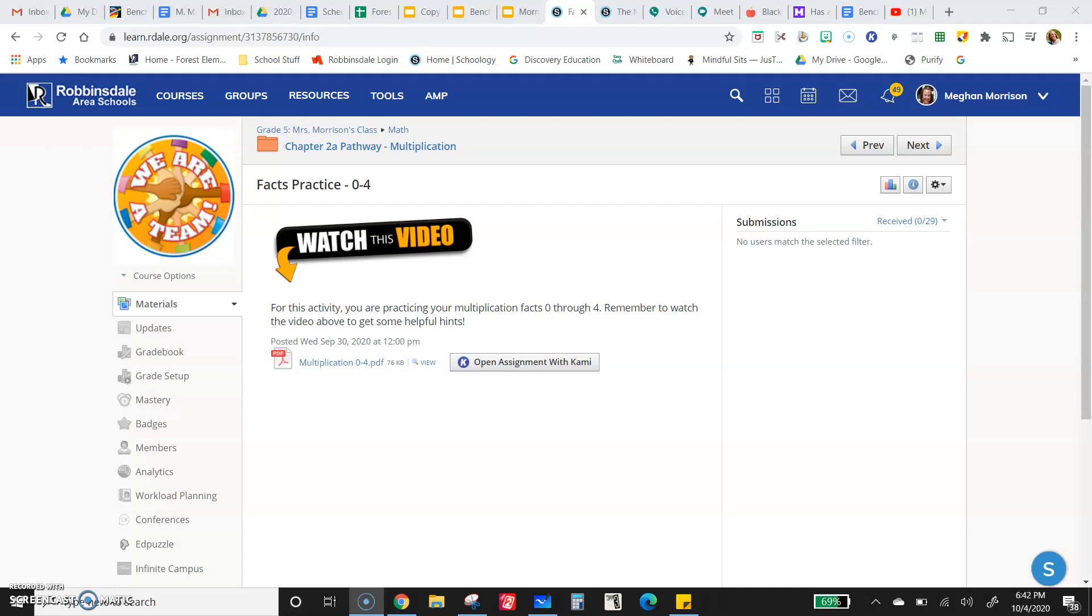Alright, fours is today. You'll notice it says facts practice zero through four, that's because the worksheet does have facts up through four. But twos you should know—count by twos or your doubles, anything times zero is just zero.